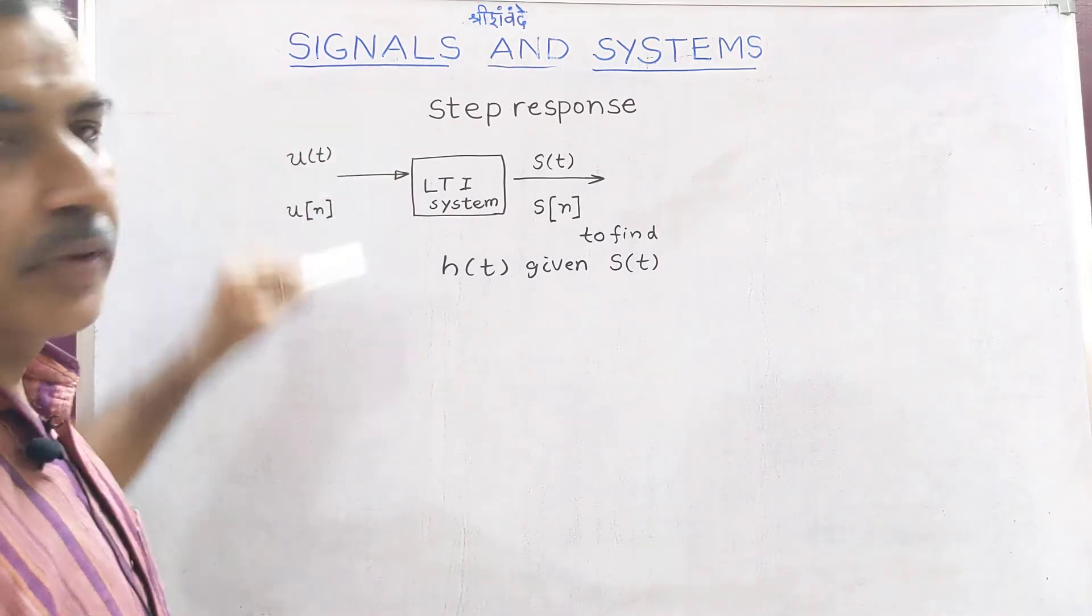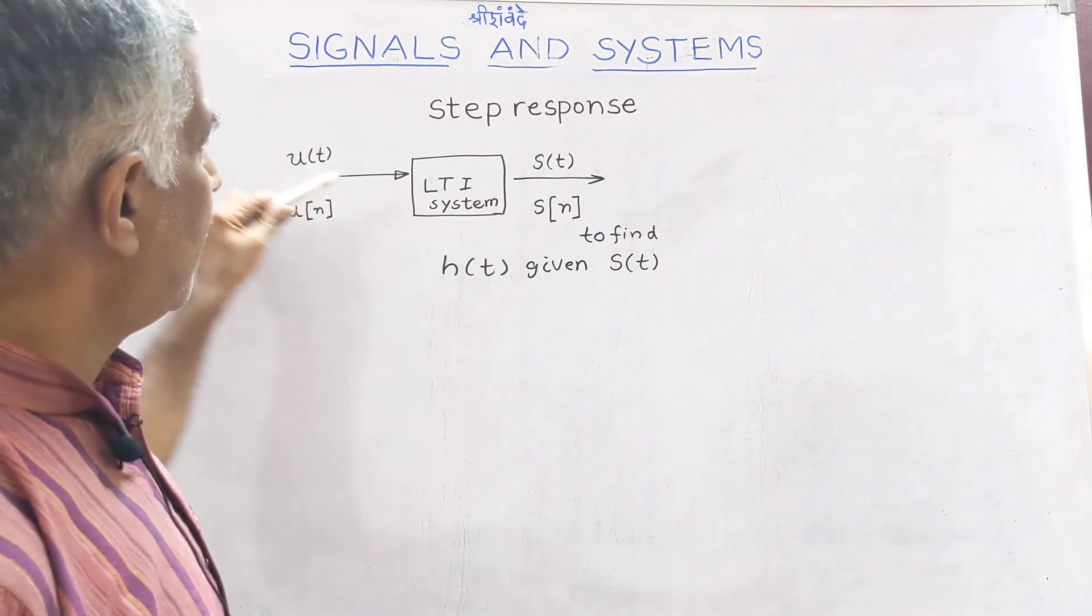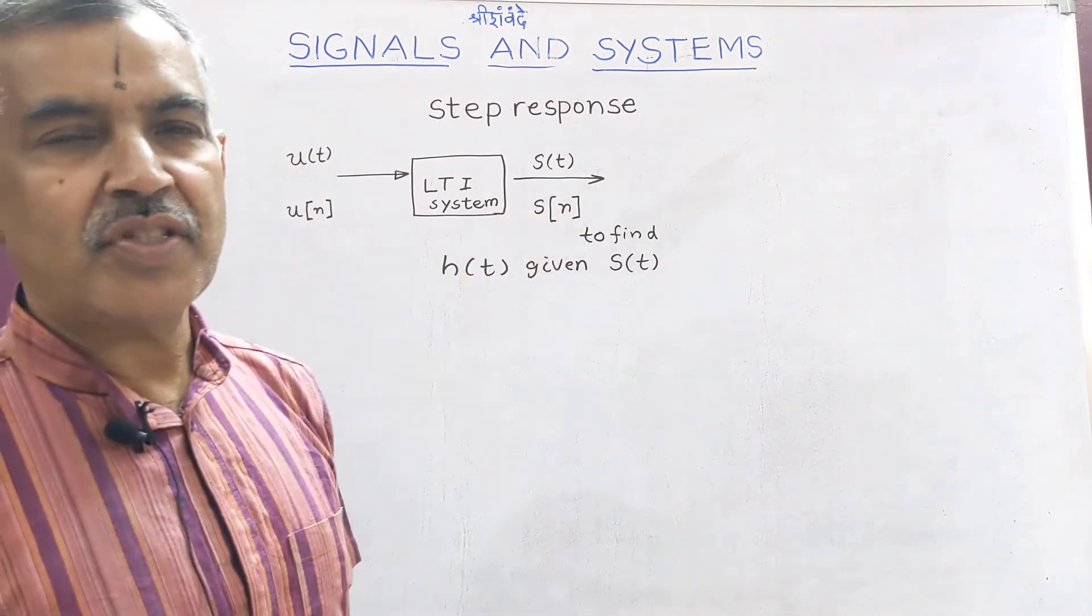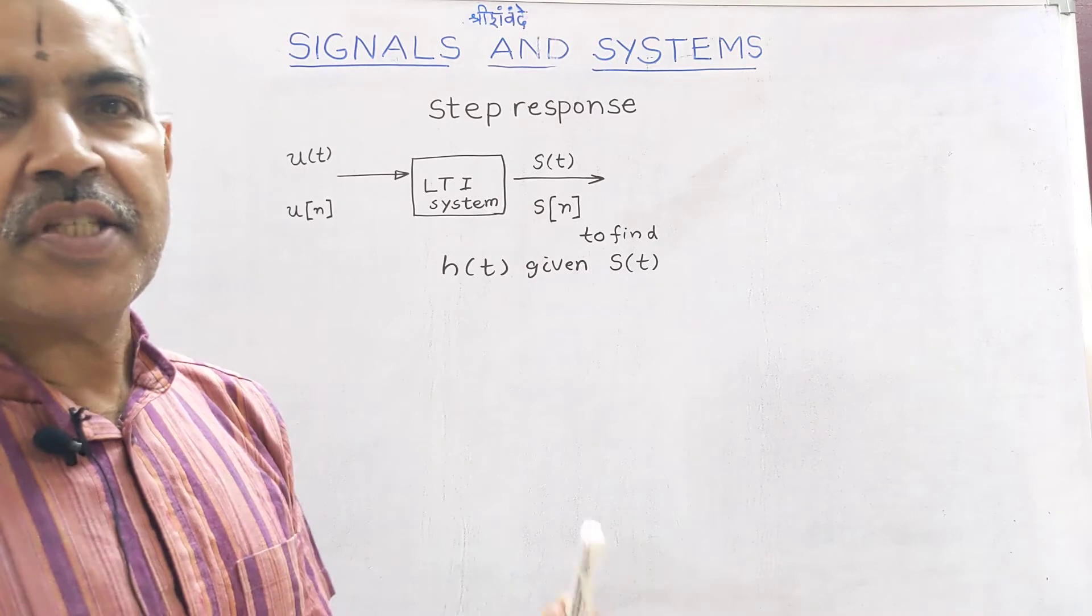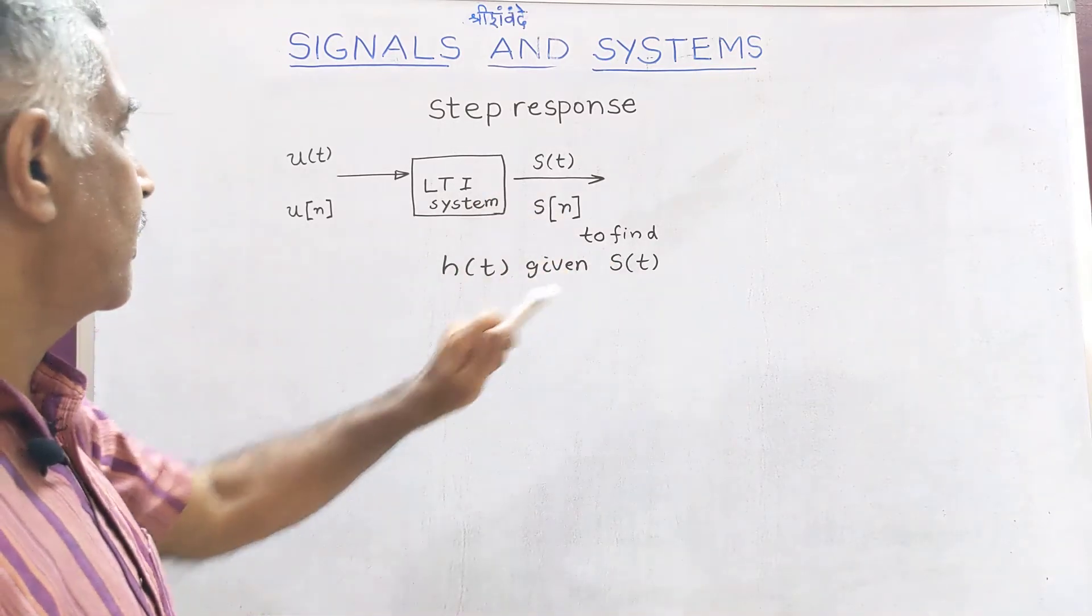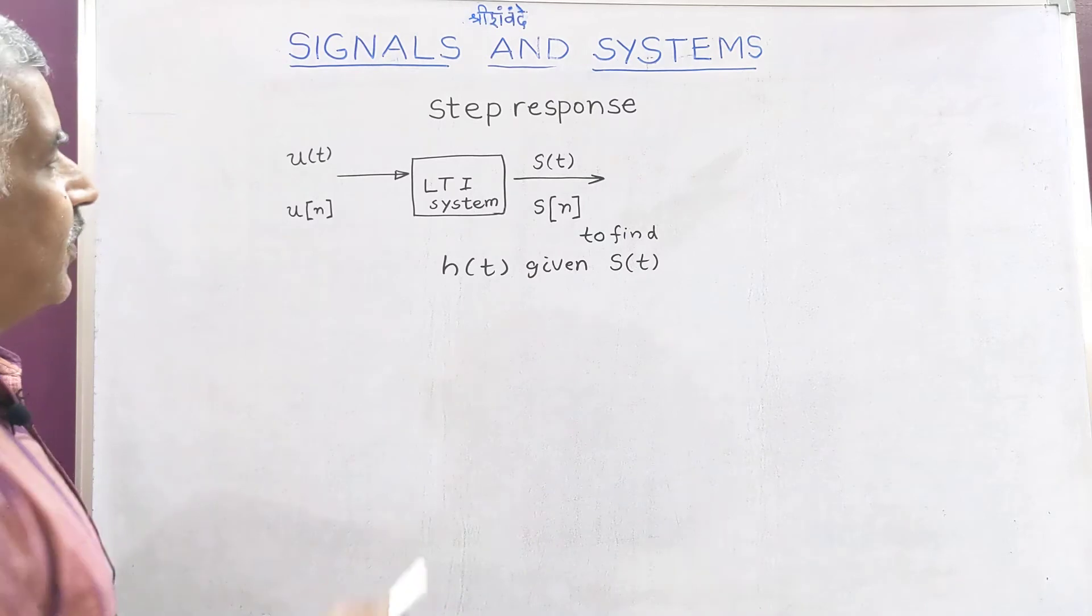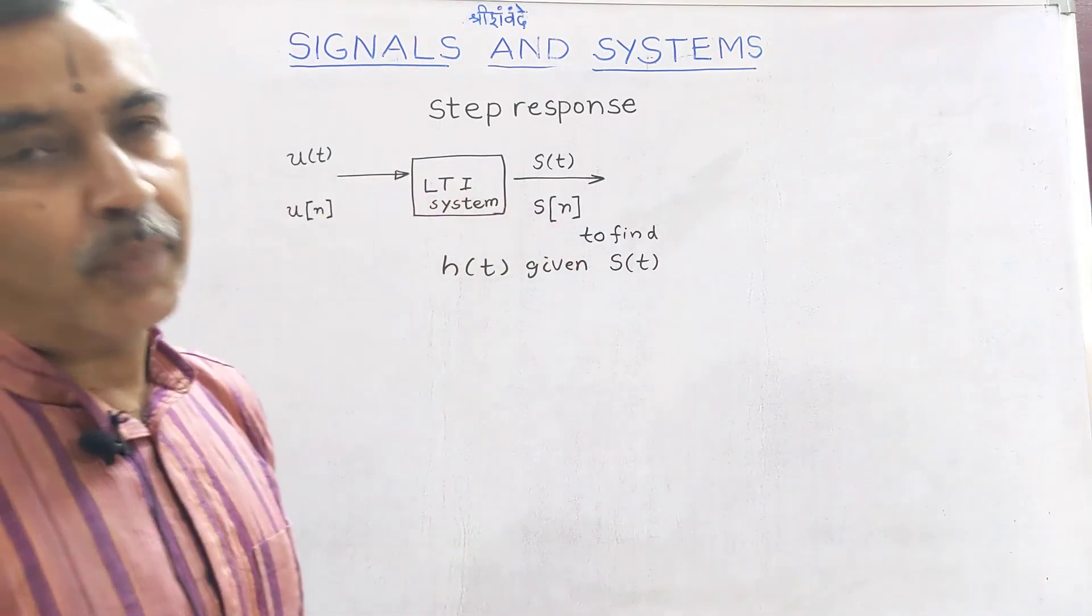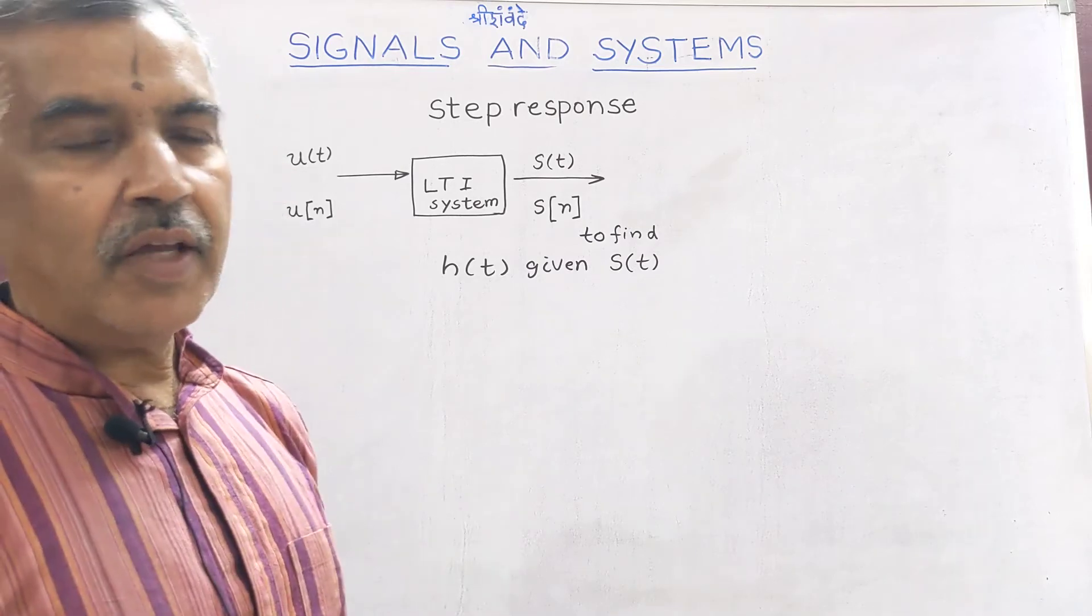We are giving a step input. On giving a step input, we get what is called the step response. S stands for step response. In the case of a discrete system, it is S of M where U of M is input.